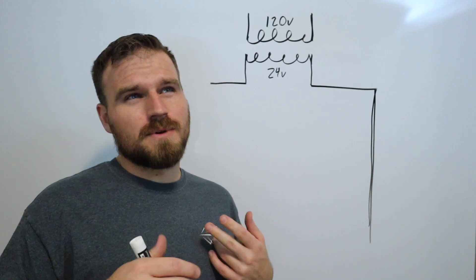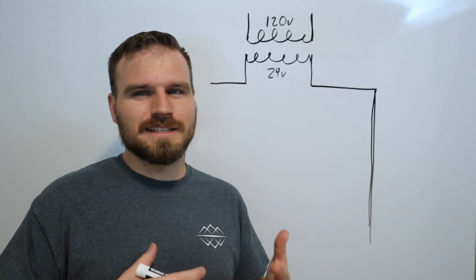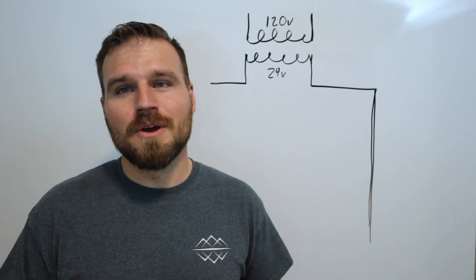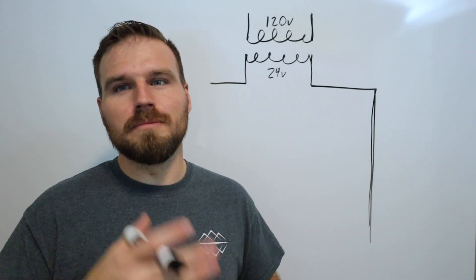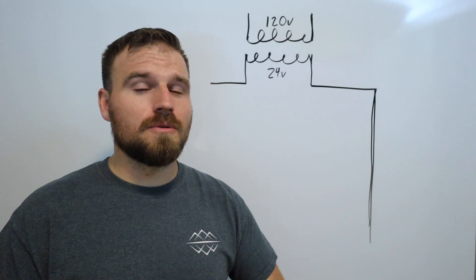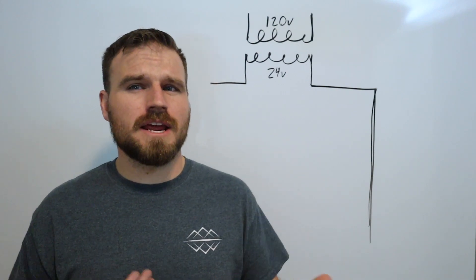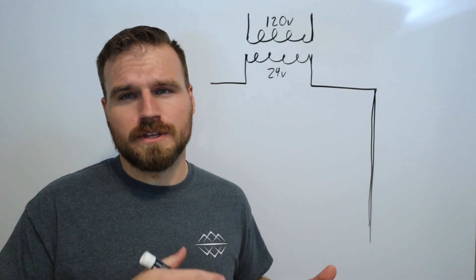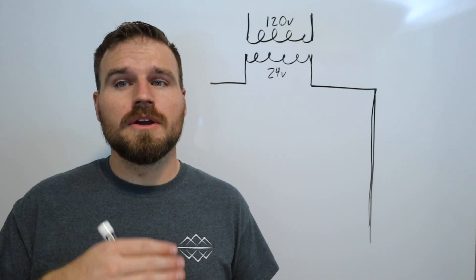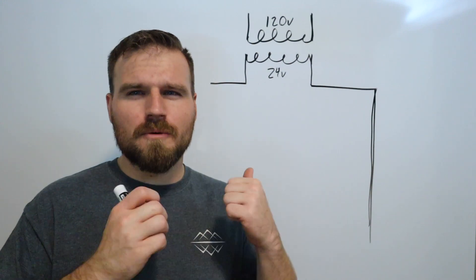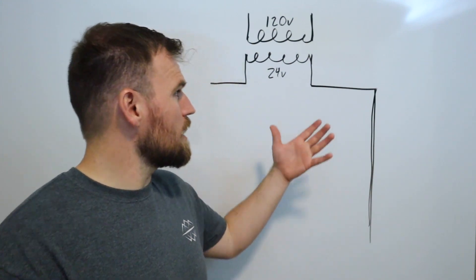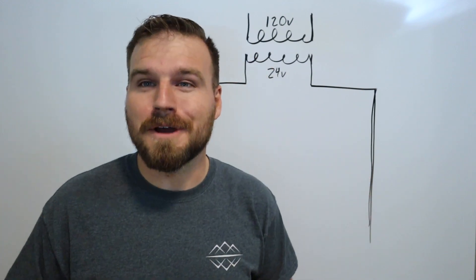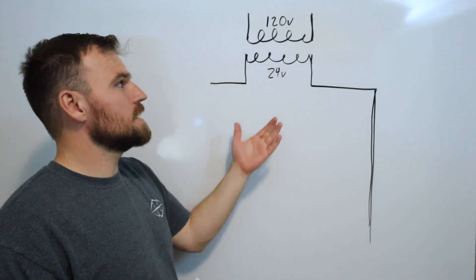Wire coloring is similarly important, though a bit more primitive. A lot of times you'll open a cabinet and all the wires will be white or blue. Wire coloring is still very important for this class - make sure you have your wire coloring correct. Let's jump into the ladder diagram and talk about coloring.